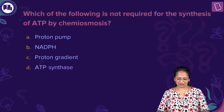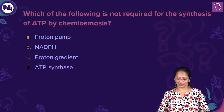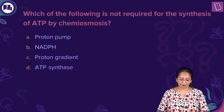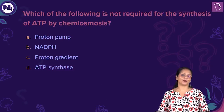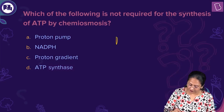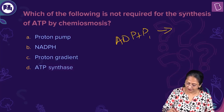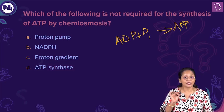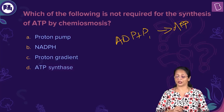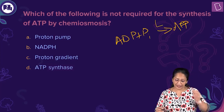A very nice question for you: which of the following is not required for the synthesis of ATP by chemiosmosis? Now the synthesis of ATP from ADP is called phosphorylation. When this takes place in the presence of light, it is called photophosphorylation. Now what is ADP?